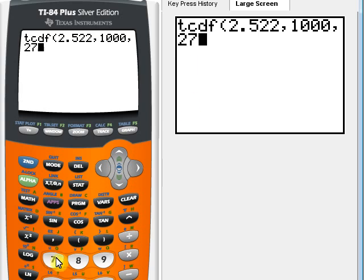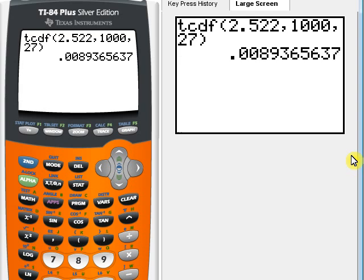We see that the p-value for a right-tailed test with 28 for the sample size and a test statistic of 2.522 would be 0.0089. And our convention here is to round those p-values to four decimal places. So we'd write 0.0089 for that. That's how we can find the p-value using the student's t-distribution using our graphing calculator.